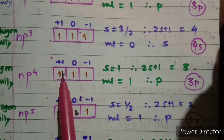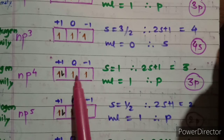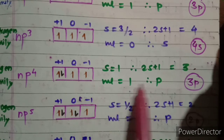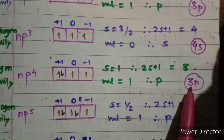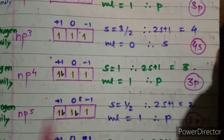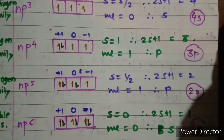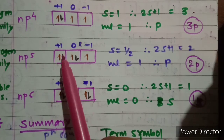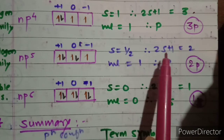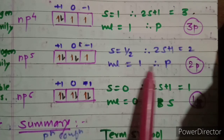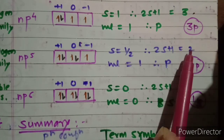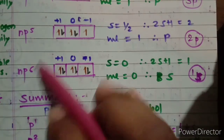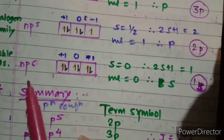For the oxygen family, np4, four electrons are present; the fourth must be paired. S = 1, 2S+1 = 3, and ml = 1, giving term P. The term symbol is ³P for the oxygen family. For the halogen family, np5, spin S = ½, 2S+1 = 2, ml = 1, so term is P — giving term symbol ²P for the halogen family.